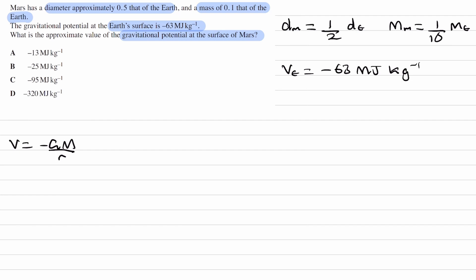In our equation, we don't have diameter, we only have radius. So let's convert this to one which involves the radius of Mars and the radius of Earth. Diameter of a circle is equal to 2 times the radius.